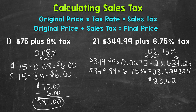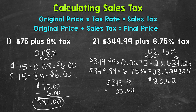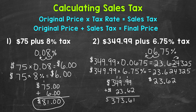So $23.62 is how much we are going to pay in sales tax. Now we add it to our original price: $349.99 plus $23.62. Adding: 9 plus 2 is 11, carry 1; 1 plus 9 plus 6 is 16, carry 1; bring the decimal down; 1 plus 9 plus 3 is 13, carry 1; 1 plus 4 plus 2 is 7; and 3 in the hundreds. Our final price with sales tax included is $373.61.